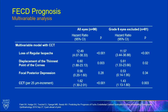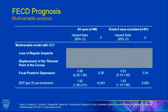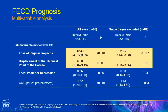In multivariable analysis, the two factors that emerge as independently significant are loss of regular isopacks and displacement of the thinnest point. Central corneal thickness is statistically significant, but the hazard ratio is very low, so clinically it is of very low importance.